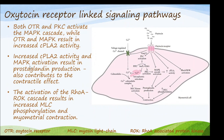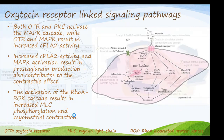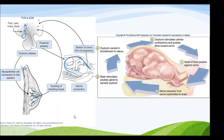So in summary, the G-protein coupled receptor activates phospholipase C, protein kinase C, MLC kinase, and Rho-associated protein kinase — all of these kinases ultimately cause myometrial contraction.